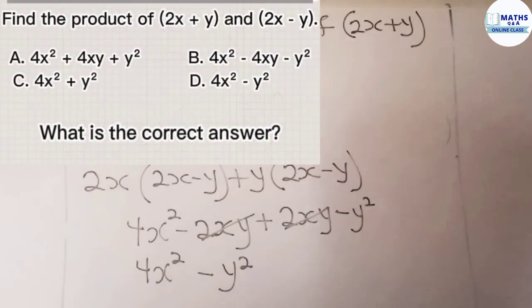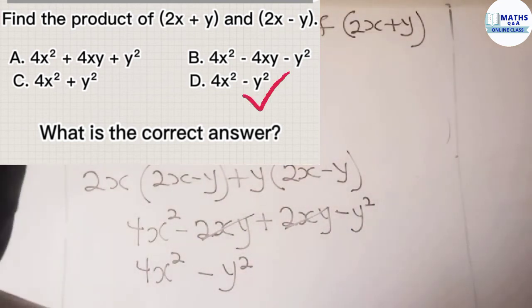So what is the correct answer? The correct option is D, which is 4x squared minus y squared.